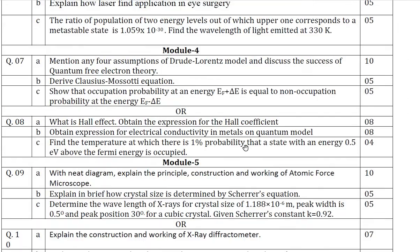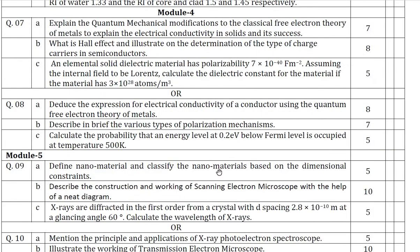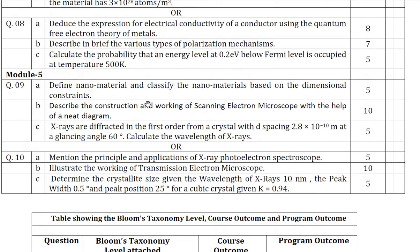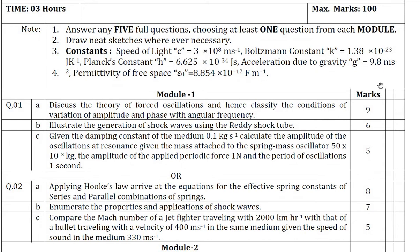Finally, module five from set one — module five is on the topic of material characterization techniques in instrumentation. Question number nine and ten are of module five. You should answer one question from module five. Go through similarly from set two, question number nine and ten. This is the way they can ask in your examination. Five modules, ten questions — you should answer five questions, considering one question from each module.